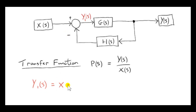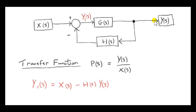So we add in x(s), and at this summing point we have to subtract H(s) multiplied by y(s). So here we have a takeoff point, and the same signal that leaves the takeoff point travels through two different routes. y(s) goes one way, and it also goes the other way. We have this block here, so we multiply y(s) by H(s). The output over here would be H(s) times y(s), and that's negated at the summing point, so we have to put a minus sign.